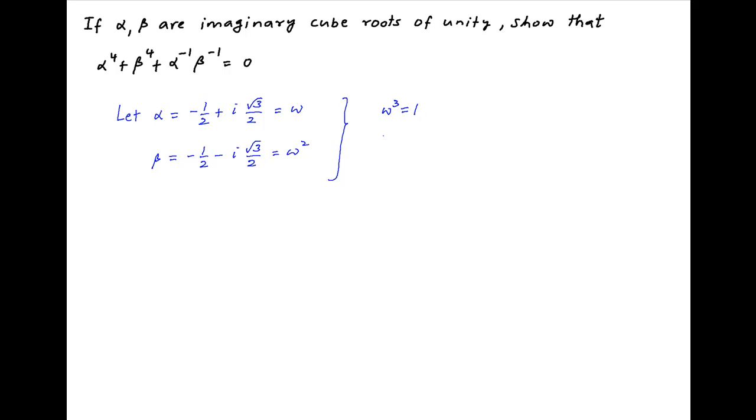Now recall that omega cube equals 1, and 1 plus omega plus omega square equals 0.